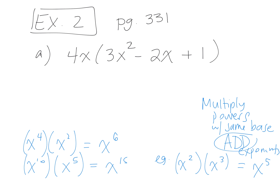Let's do this one together: 4x times 3x to the power of 2. If there's no exponent written, it's to the power of 1 — so x means x to the power of 1. To multiply, do the numerical part first: 4 times 3 is 12. Then x to the power of 1 times x to the power of 2 is x to the power of 3.